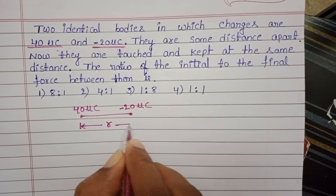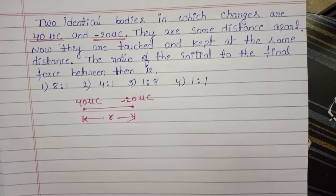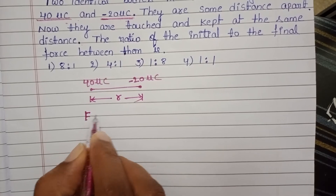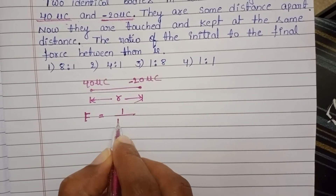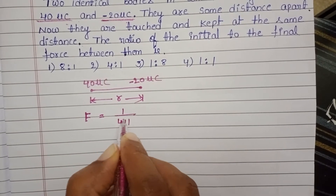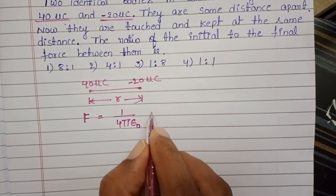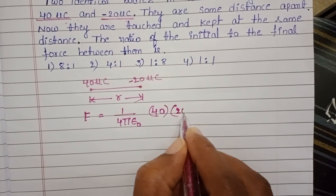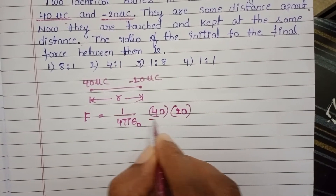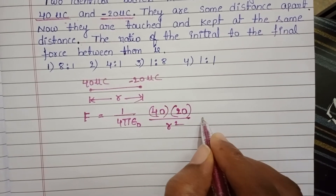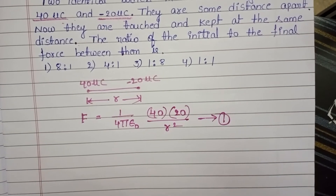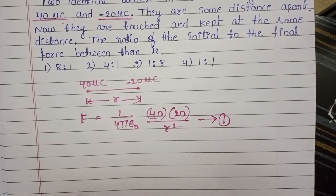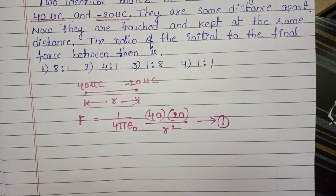The electrostatic force between these two charges is F equals 1 over 4 pi epsilon naught, multiplied by the product of the charges — 40 into 20 — divided by r squared. Let this be equation 1.